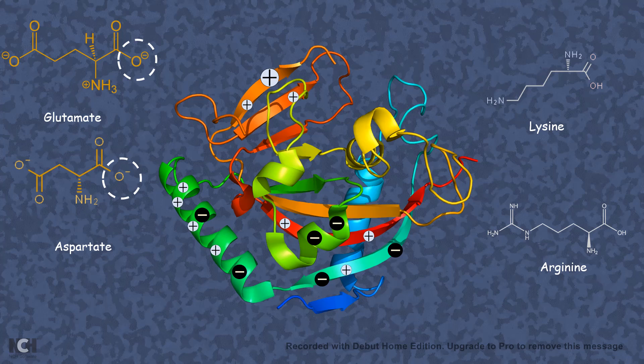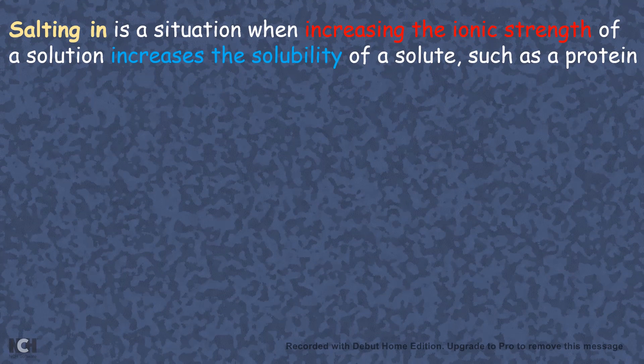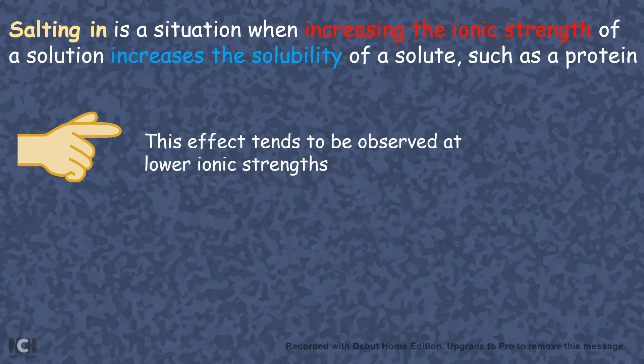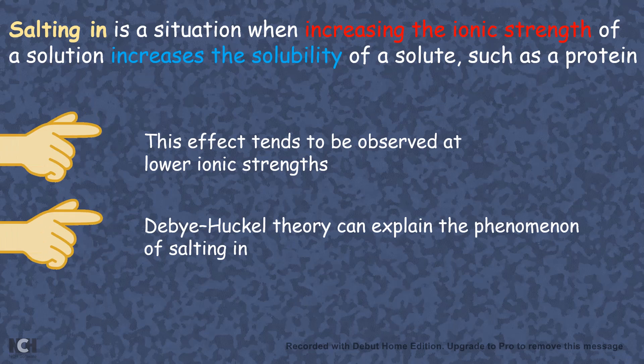Now, salting in is the phenomena where the increase in ionic strength is actually increasing the solubility constant or increasing the solubility of the protein. So how does that happen? So this effect is only observed in lower ionic strength and different for different proteins. And a Debye-Hückel theory can actually explain the phenomena.